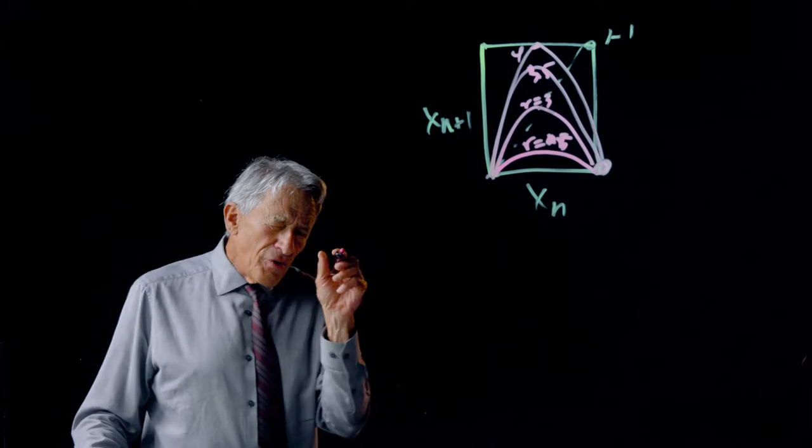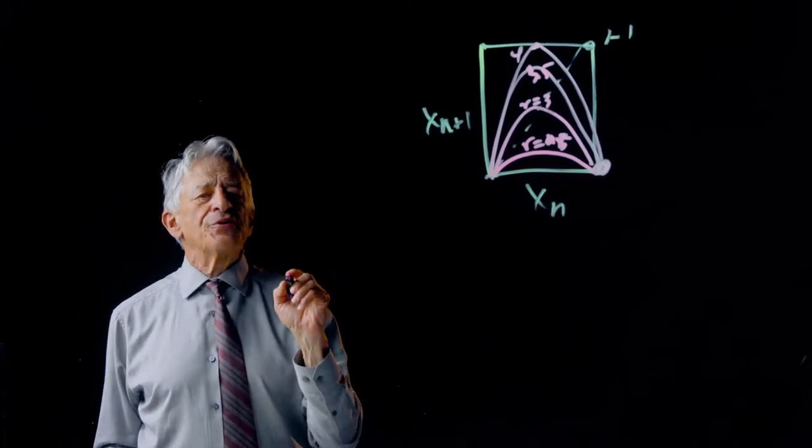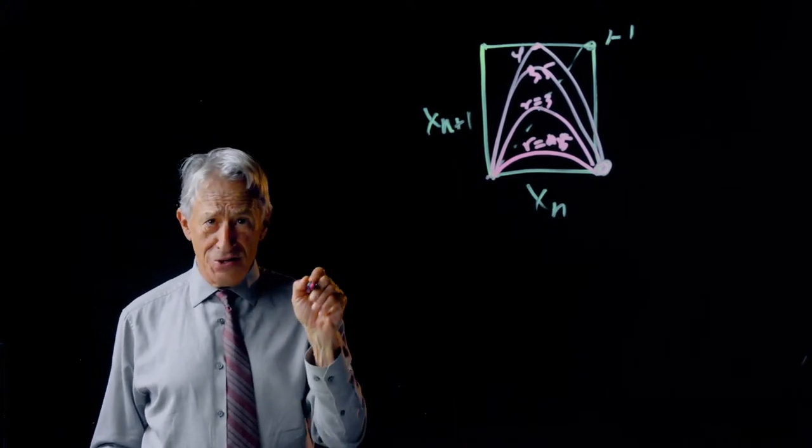If you increased r a little bit further, you could actually produce an eight-point oscillation, A, B, C, D, E, F, G, H, which would then repeat again and again and again.